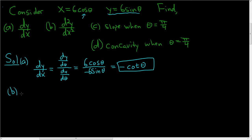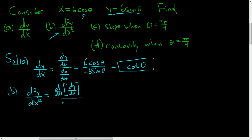For part B, we want the second derivative of y with respect to x. The formula for the second derivative is d/dθ of (dy/dx) divided by dx/dθ. So d/dθ of (dy/dx) is the derivative of negative cotangent. The derivative of cotangent is negative cosecant squared, but we already have a negative, so this will just be cosecant squared θ.